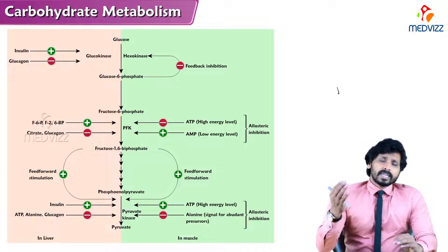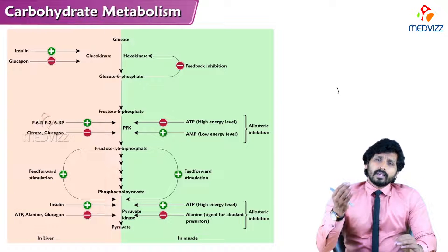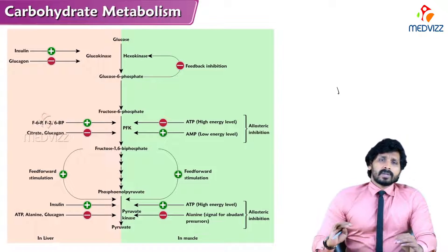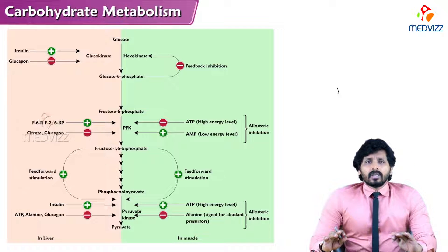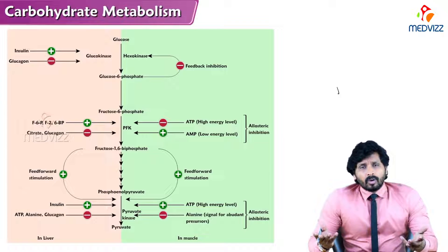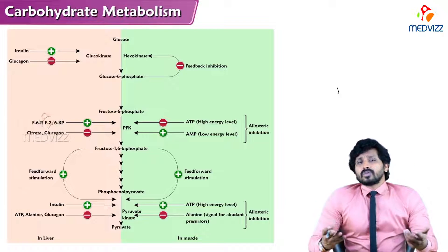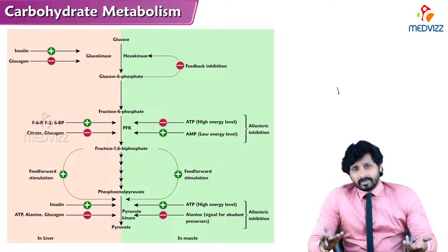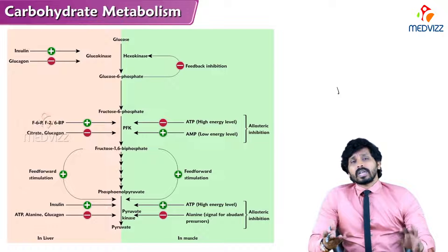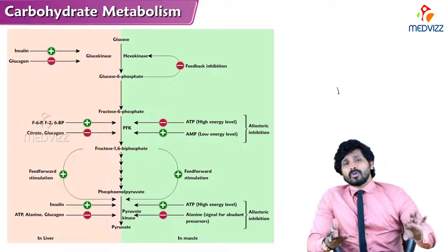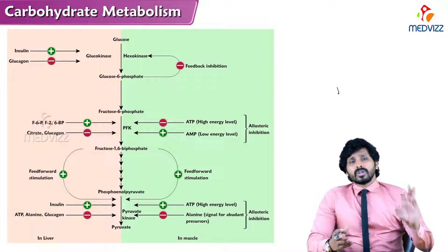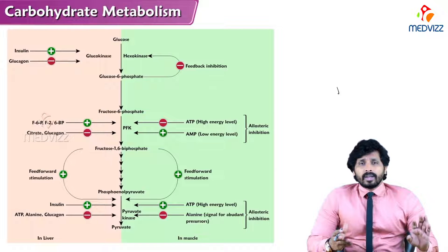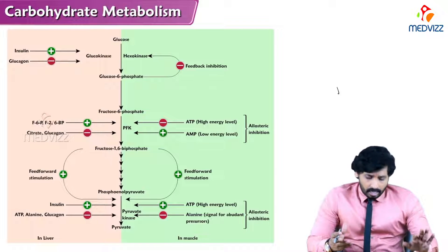In the well-fed state, glycolysis continues to produce ATP. In starvation, there is no energy and no glucose, so glycolysis cannot take place and has to stop. The factors that stop glycolysis act in the case of starvation.